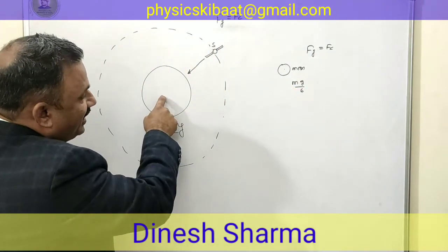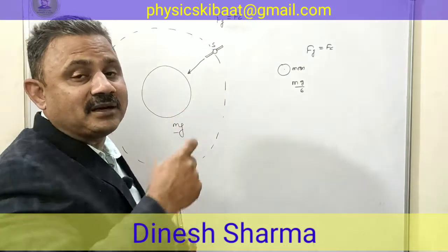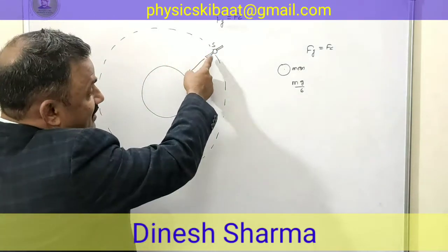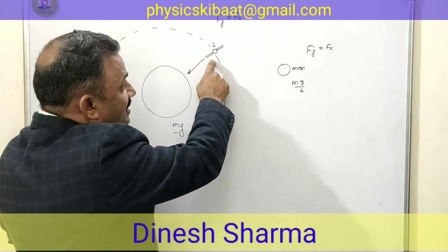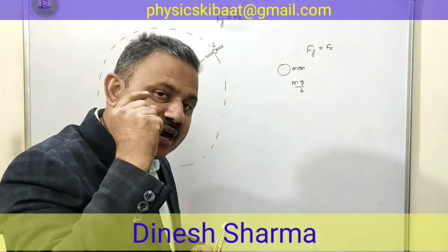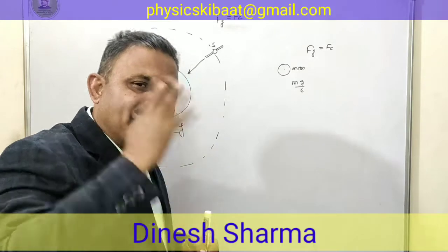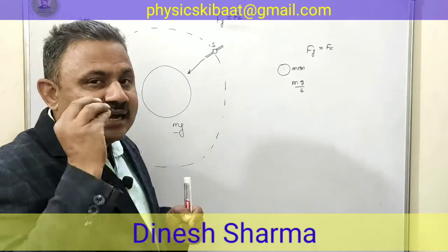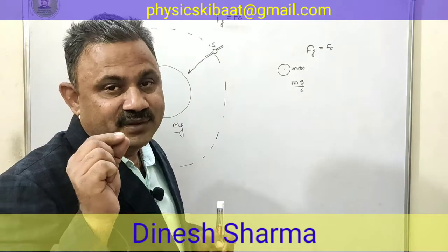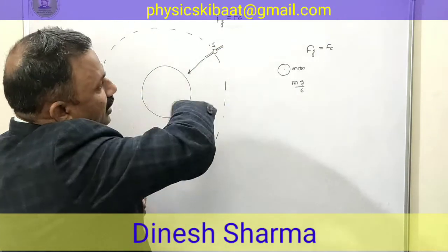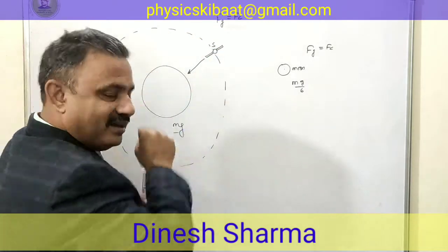That simply means ki Earth ke karan is satellite ke oopar jitna gravitational force hoga, that force is giving the necessary centripetal force. That means no force is left on that person — the net force on the person is zero. Toh koi force is par kaam nahi kar rahi hai. Aur kyunki is artificial satellite ka mass kafi kam hai, toh is kam mass ke karan wo satellite aur wo insaan — unke beech gravitational force ke karan acceleration bohot hi kam hoga, force bohot hi kam hogi. That means weight lagbhag negligible hi hoga, aur jo force thi wo centripetal force ke liye use ho gayi.